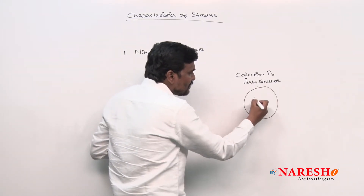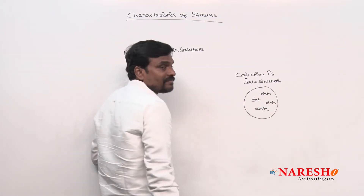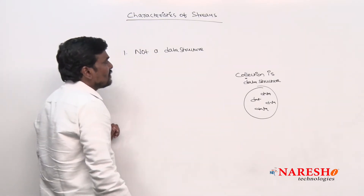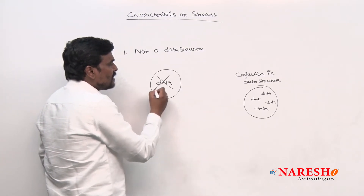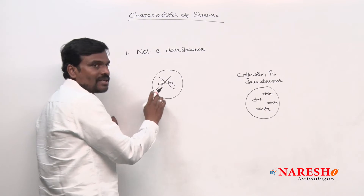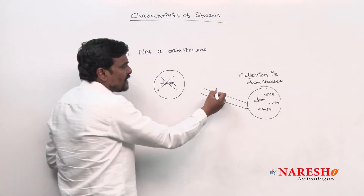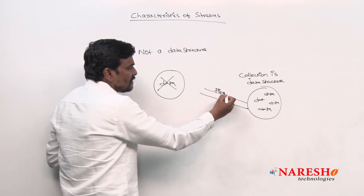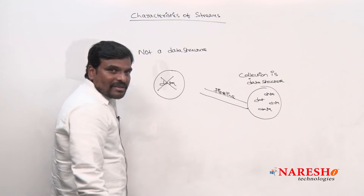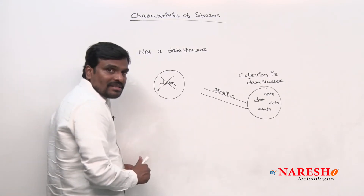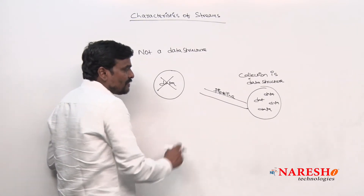Collection is having data and this data is stored in the form of objects. But stream is not a data structure — the stream does not have any data. There is no data in a stream, but the stream reads the data from a source through a pipeline and performs certain operations.